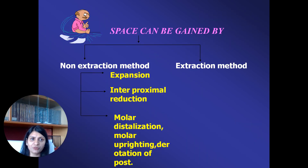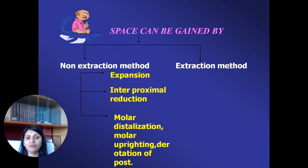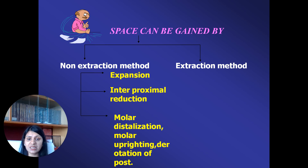Then what are the methods of gaining space? Broadly, these methods are categorized under two types: extraction and non-extraction. As the term itself suggests, extraction means we are going to extract a few teeth from the oral cavity in order to gain space. Whereas the non-extraction methods involve modalities like expansion, interproximal reduction, molar distalization, molar uprighting, and derotation of posteriors. We are going to take all these modalities separately in all the modules as outlined in the course.